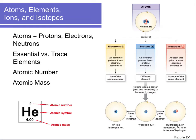Atoms are the building blocks of all matter, and structurally atoms are made up of protons, electrons, and neutrons. Protons are positively charged, electrons are negatively charged, and neutrons are neutral. An atom has an equal number of protons and electrons — two pluses and two minuses — so the overall charge is zero. In the nucleus you find the heaviest particles, your protons and neutrons, and then electrons float around in electron shells or orbitals.